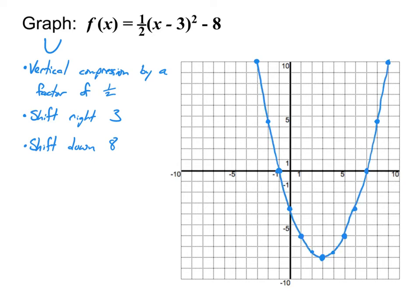When entering answers like this on the computer, start by plotting your vertex first, then plot another point. If that next point is at a half or decimal value and the system only accepts whole numbers, just look for a different point at a whole number — there are many options here plotted at whole-number coordinates. So anytime you hit a fraction or decimal, just pick a different point.